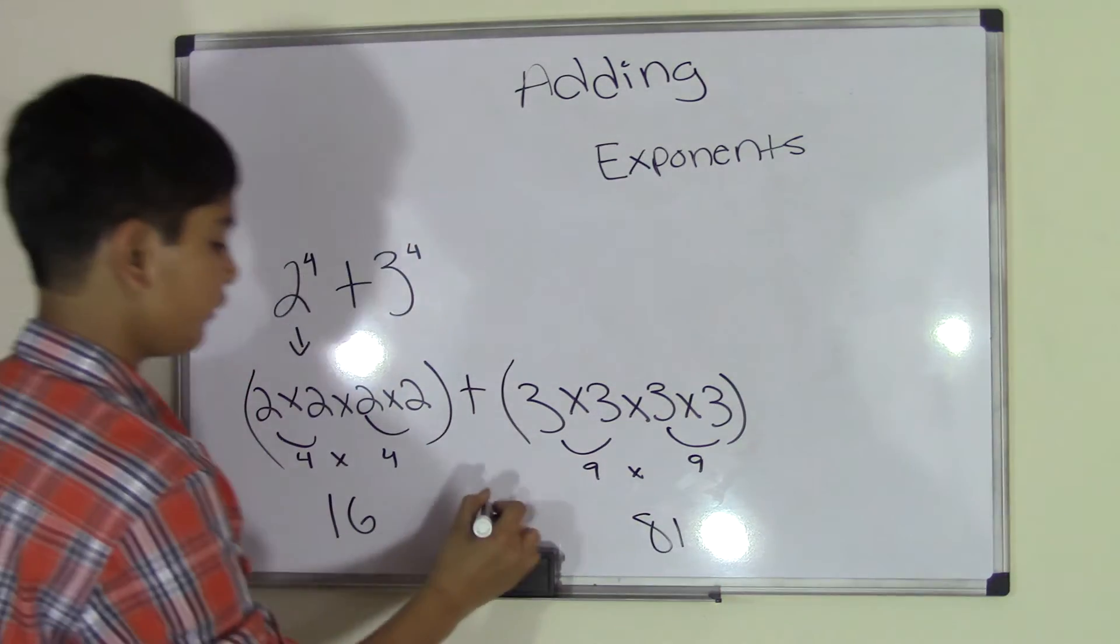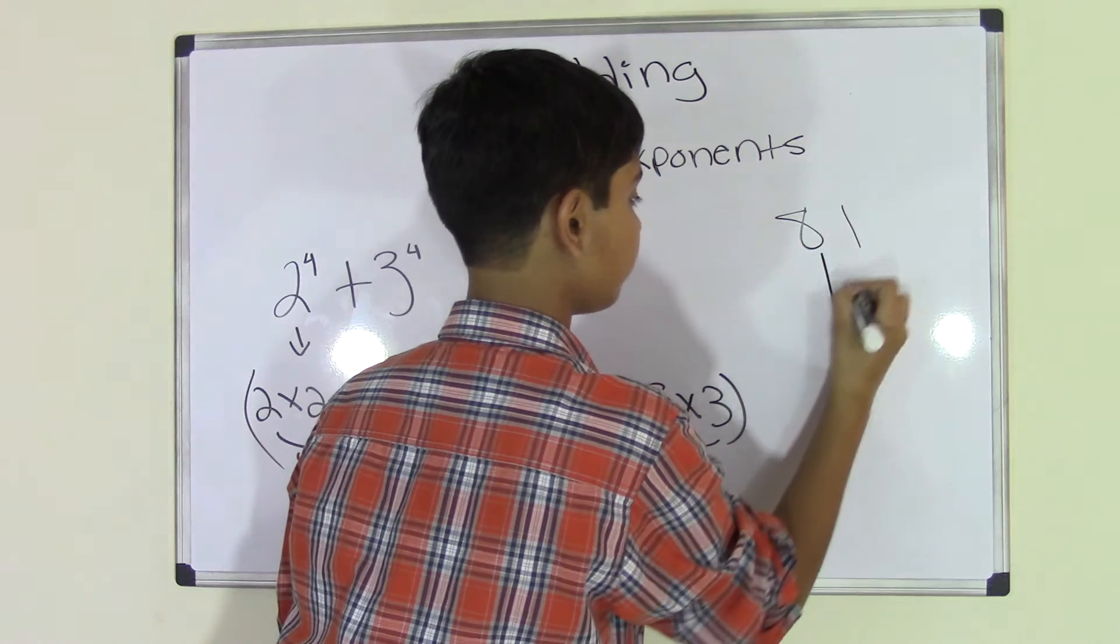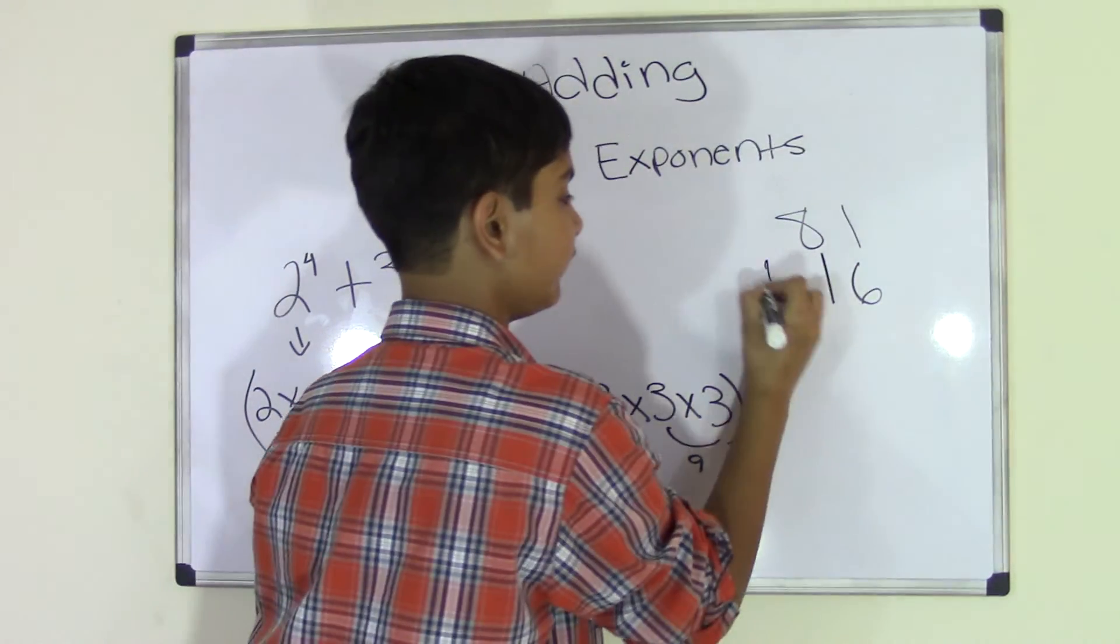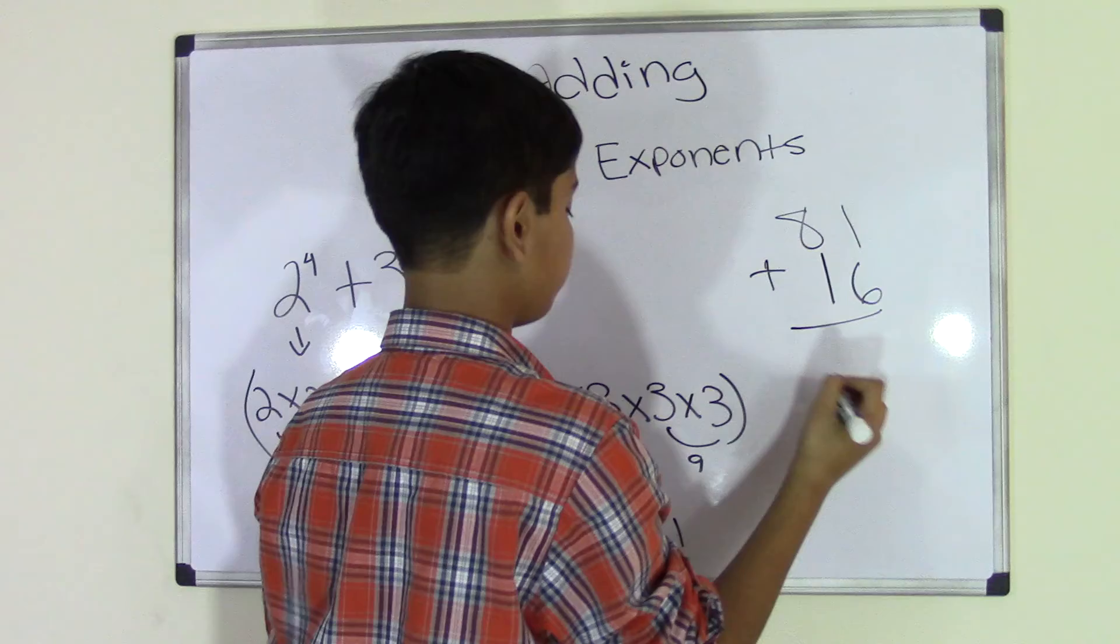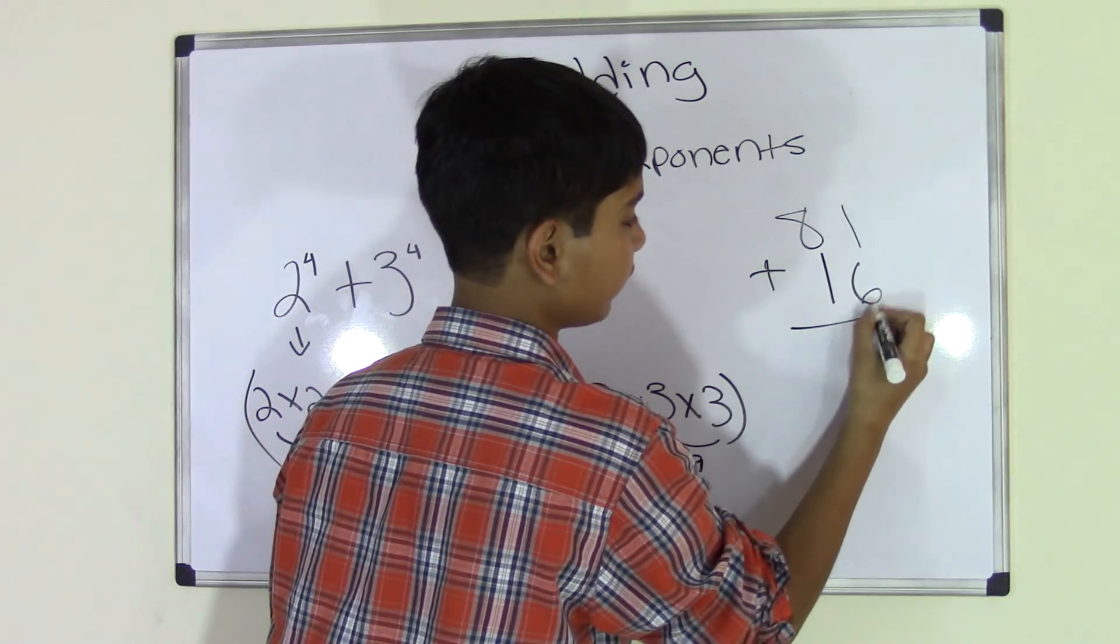So now, all we're doing is adding 81 plus 16. Isn't that easier? I mean, with exponents, you can make huge problems even easier to solve. So let's do that.